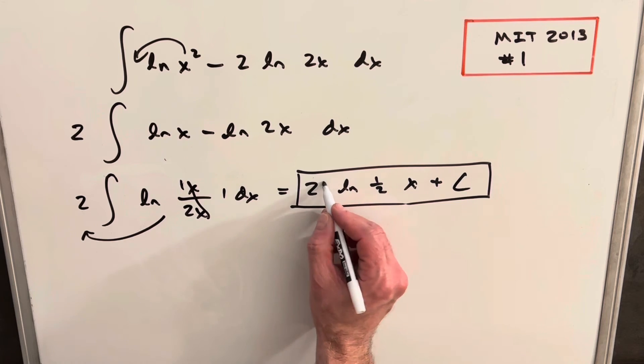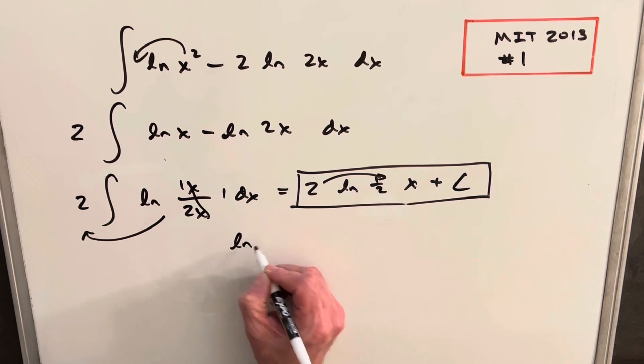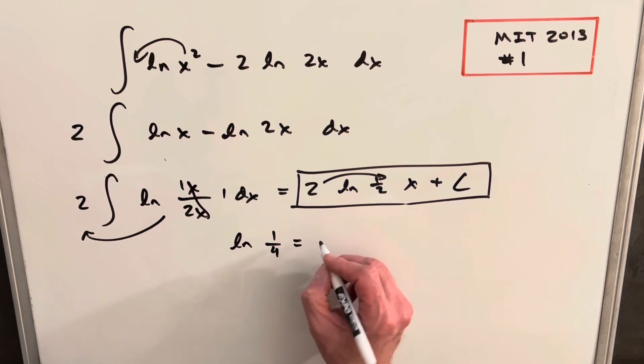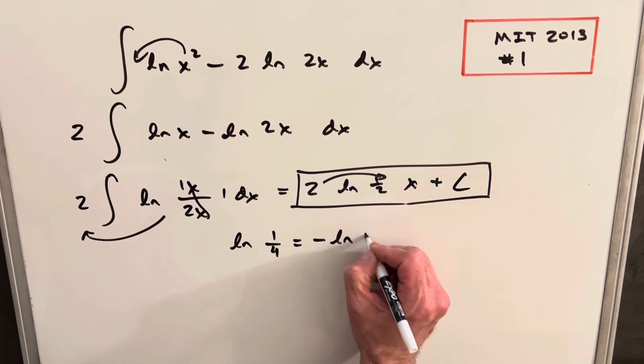To match the solution, what I can do is bring the 2 into the exponent, and we can write that as ln of a half squared. We get 1 fourth, but that's the same as minus ln 4.